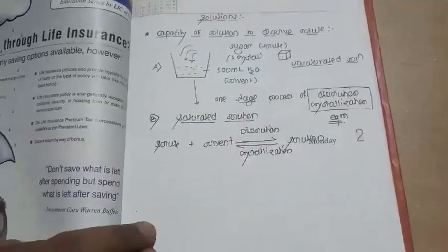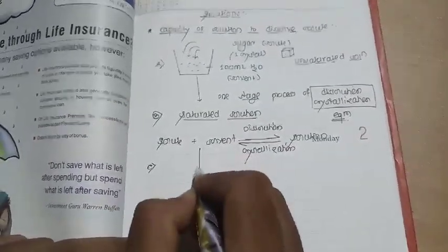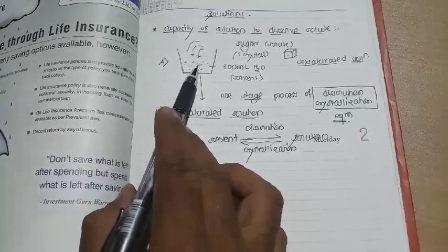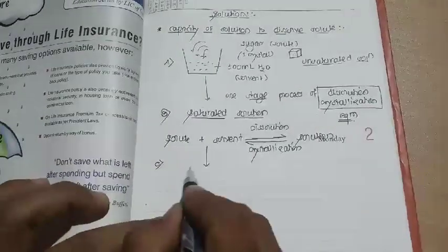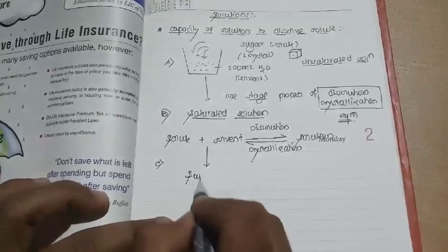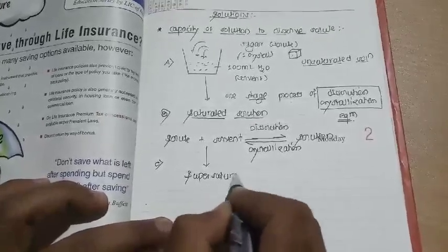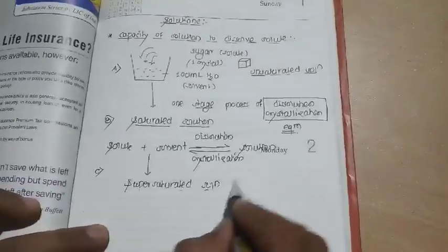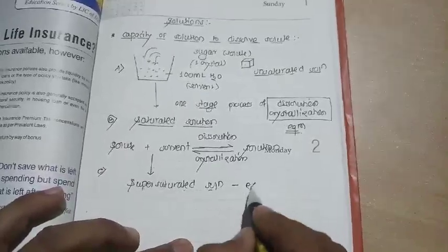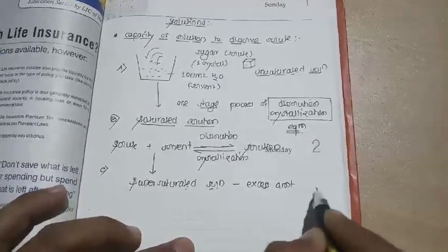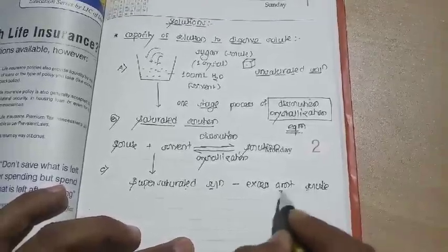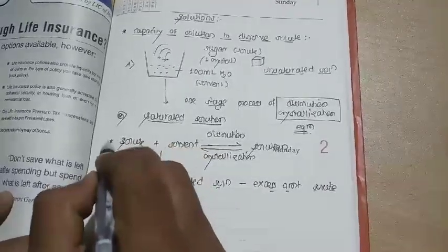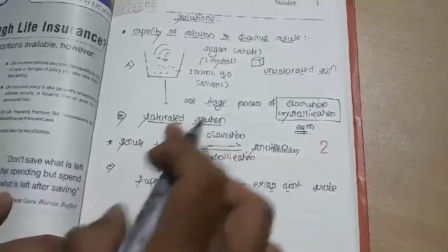In case C, if you continue to add more sugar to the same 100 ml of water beyond the saturation point, a stage is reached called a super saturated solution. In a super saturated solution, there is an excess amount of solute present beyond what the equilibrium allows.